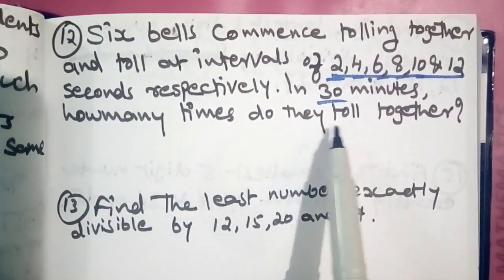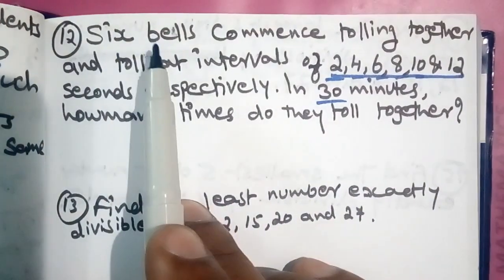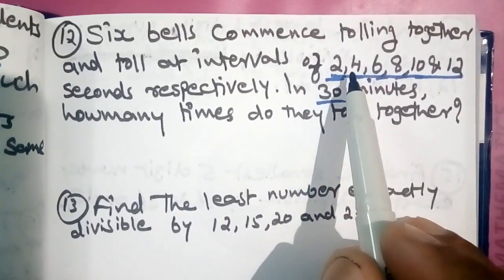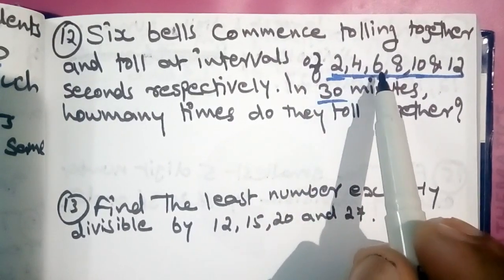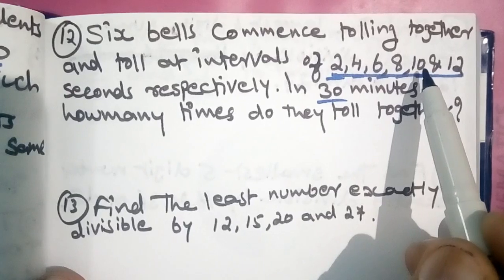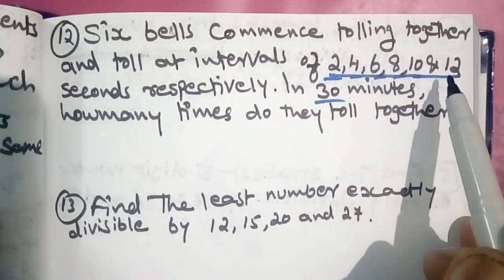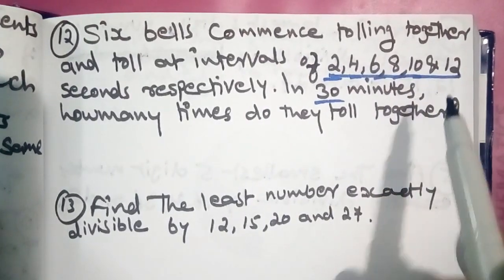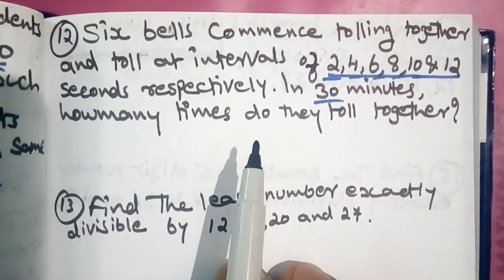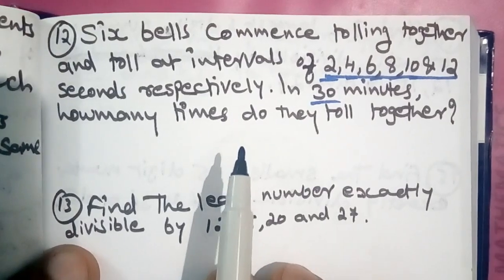6 bells toll at 2 seconds, 4 seconds, 6 seconds, 8 seconds, 10 seconds, and 12 seconds. How many times do they all toll together?